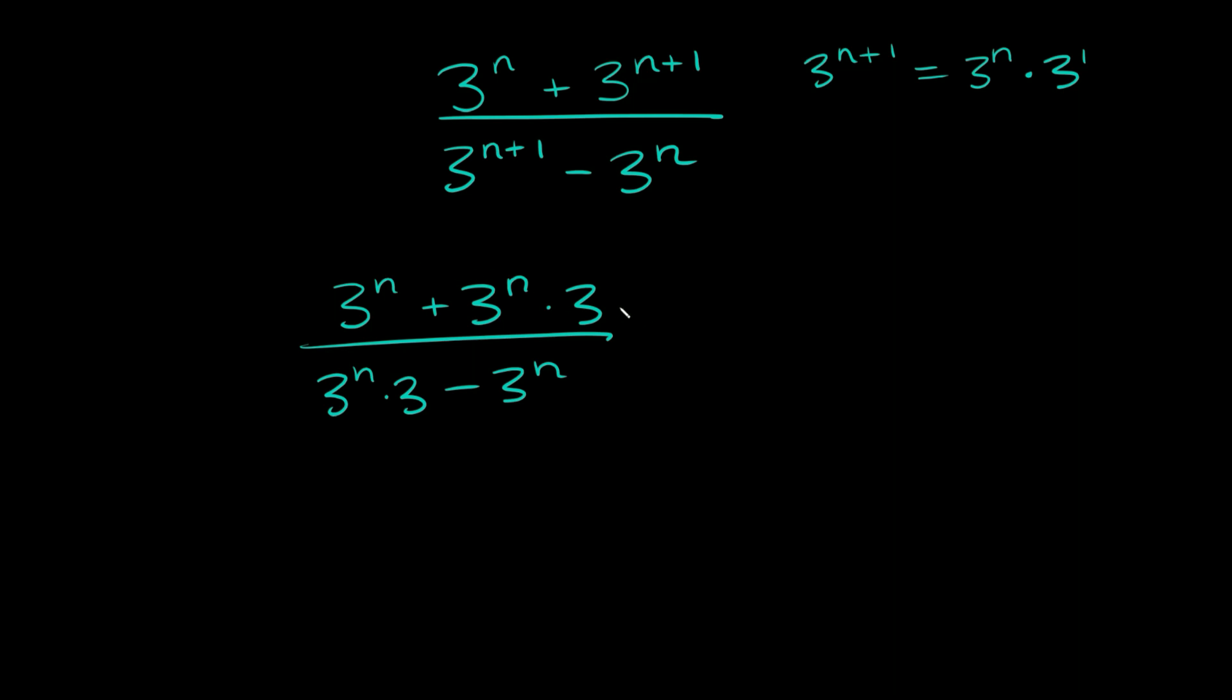something else that we can do now is you can see we have a bunch of threes everywhere. So why don't we factor out a 3? So let's factor out a 3, not just a 3 though, let's factor out 3 to the n so we can try and get rid of this exponent as well.